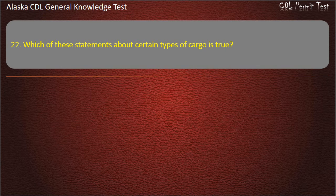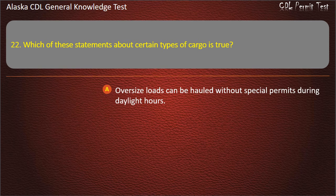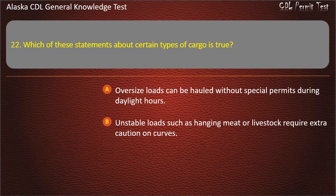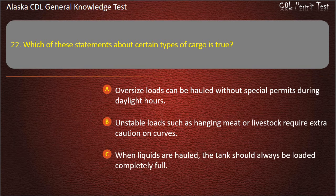Question 22. Which of these statements about certain types of cargo is true? Oversized loads can be hauled without special permits during daylight hours; unstable loads such as hanging meat or livestock require extra caution on curves; or when liquids are hauled, the tank should always be loaded completely full. Answer: Unstable loads such as hanging meat or livestock require extra caution on curves.